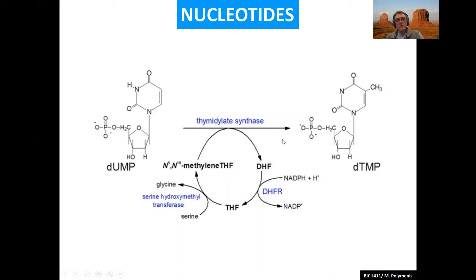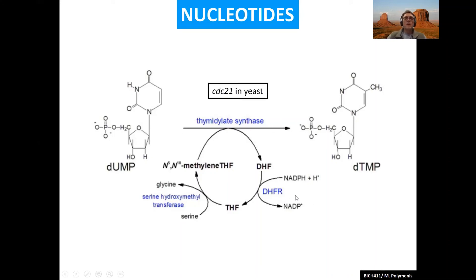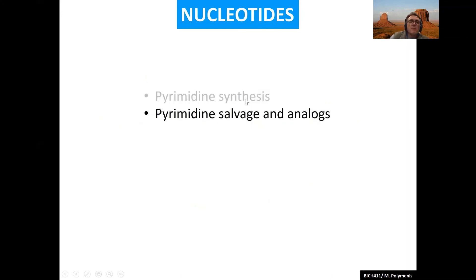Regenerating the proper folate form is an important component of this reaction, which is essential for making DNA building blocks. Interference at any one of these steps will inhibit TMP synthesis and DNA replication. In fact, many drugs used in chemotherapy to this day also target DHFR. Thymidylate synthase is essential for life — knocking it out in yeast, CDC21, is a lethal event.